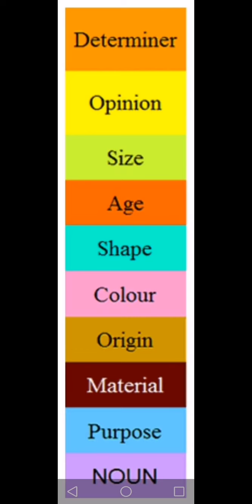Let's have a look: determiner, opinion, size, age, shape, then color, then origin, then materials, and purpose, and then noun. This is the table for the correct order of adjectives. You can select a noun, think of adjectives about that noun, and then place those adjectives in this table for the correct order. Your sentence will then be grammatically correct.